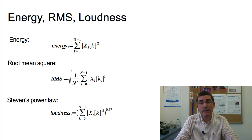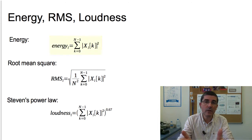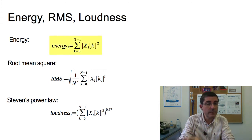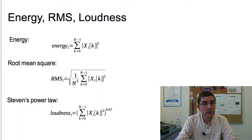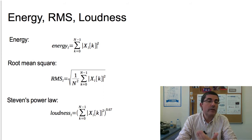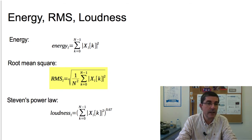The energy of an audio frame can be computed from the magnitude spectrum or from the time signal. In the magnitude spectrum, we do it by summing over the square of the magnitudes, as shown in the first equation. Another energy-related measure is the RMS, or root mean square, which is the square root of the arithmetic mean of the energy — another way to compute the energy of the signal.